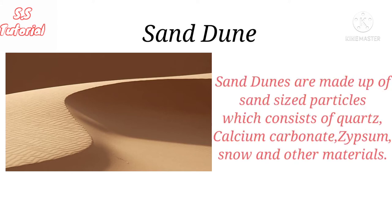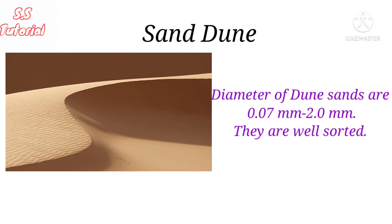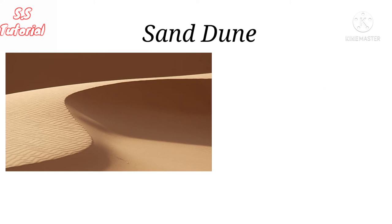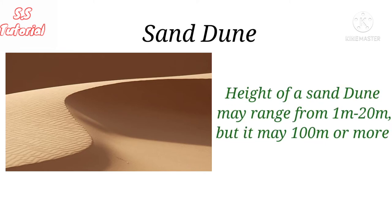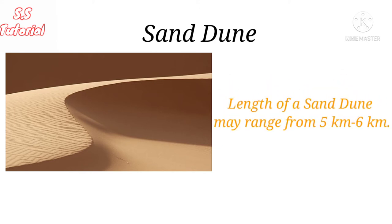Dunes are made of sand-sized particles and may consist of quartz, calcium carbonate, snow, gypsum, or other materials. Common dune sands have diameters between 0.07 mm to 2 mm and they are well sorted. In general, the height of sand dunes may range from 1 meter to 20 meters, but they may be 100 meters or more. The length of sand dunes ranges from 5 to 6 km.